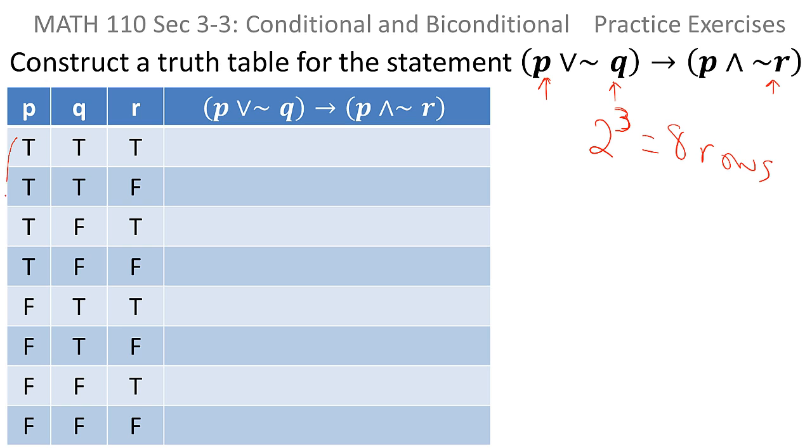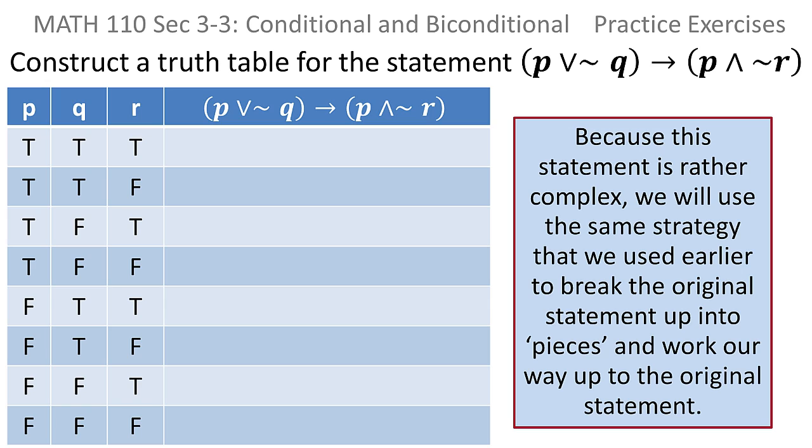So we have 8 rows of the table already seated with every possible combination of true and false. And because this statement is a little bit more complex, I'm going to resort to the same strategy that I used in some earlier problems I worked from this section, where I break the statement up into pieces and work with each piece and then put it back together.